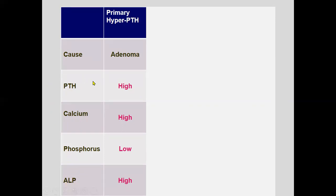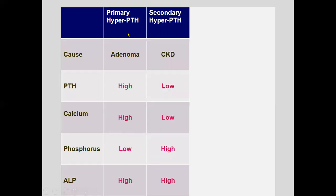Let's differentiate a few conditions. Primary hyperparathyroidism — most common cause is adenoma: PTH is high, calcium is high, phosphorus is low, and alkaline phosphatase is borderline high or high. Secondary hyperparathyroidism — most common cause is chronic kidney disease: PTH is high, calcium is low, and phosphorus is high.